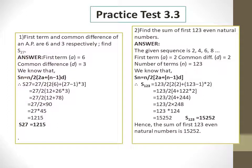Now the sums given in practice set 3.3 are based on these formulas. We are taking our first sum. The first term and common difference of the AP are 6 and 3 respectively. Find S_27. So A equals 6, D equals 3, and we want to find S_27. Using the formula: S_N equals N upon 2 into bracket 2A plus N minus 1 into D.